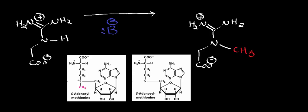Methyltransferases are often pretty easy to identify because they'll often be labeled as N-methyltransferase, meaning the methyl group is transferred to a nitrogen, or O-methyltransferase, where it's transferred to an oxygen. There are a few C-methyltransferases, but the overwhelming majority are N- and O-methyltransferases. So you would know we're going to transfer a methyl group to the nitrogen because this is guanidinoacetate N-methyltransferase.